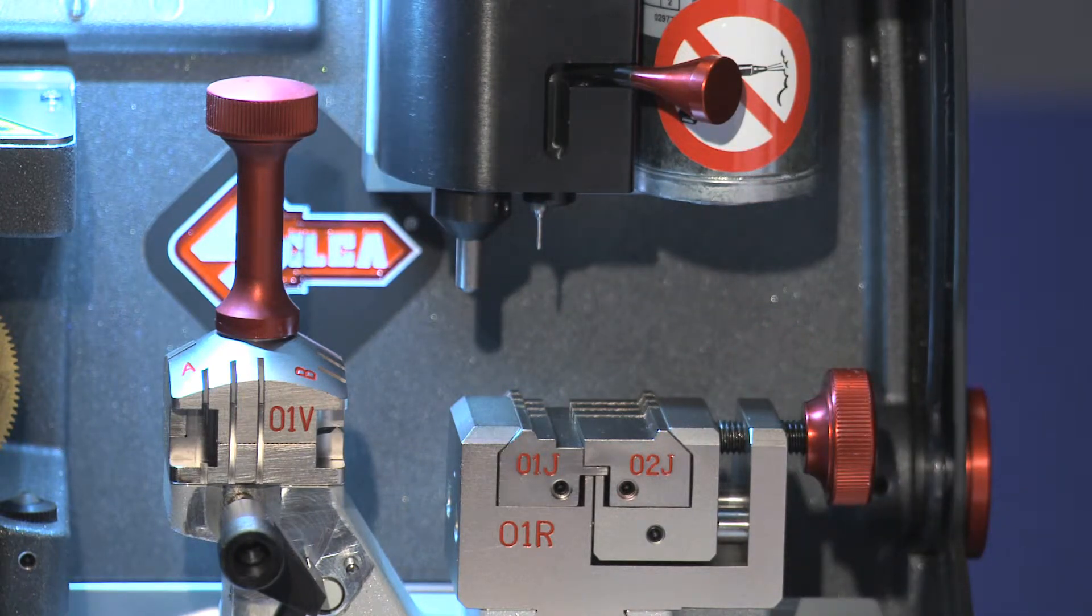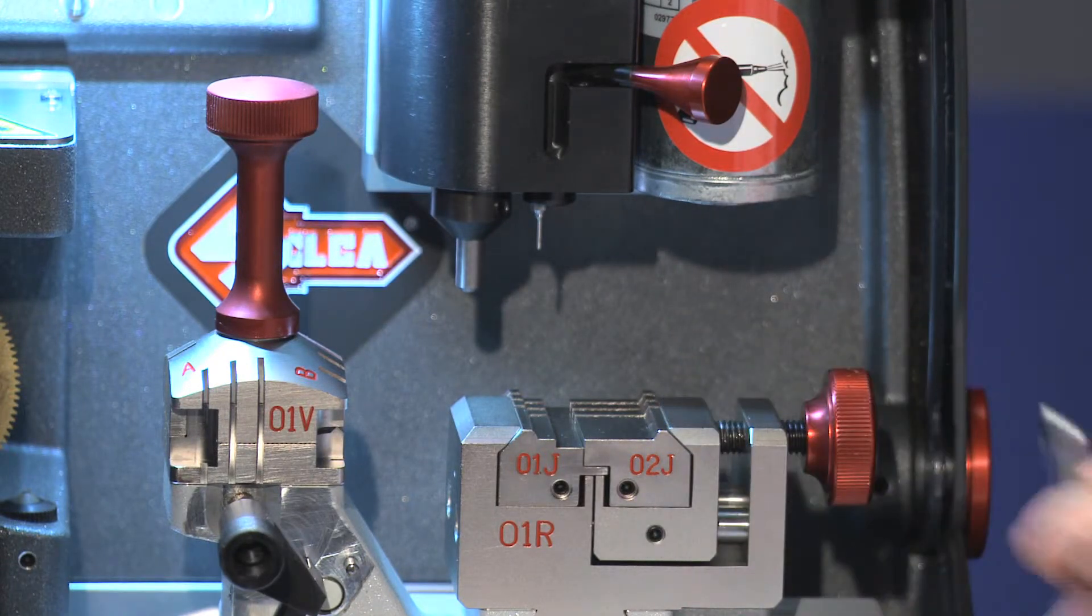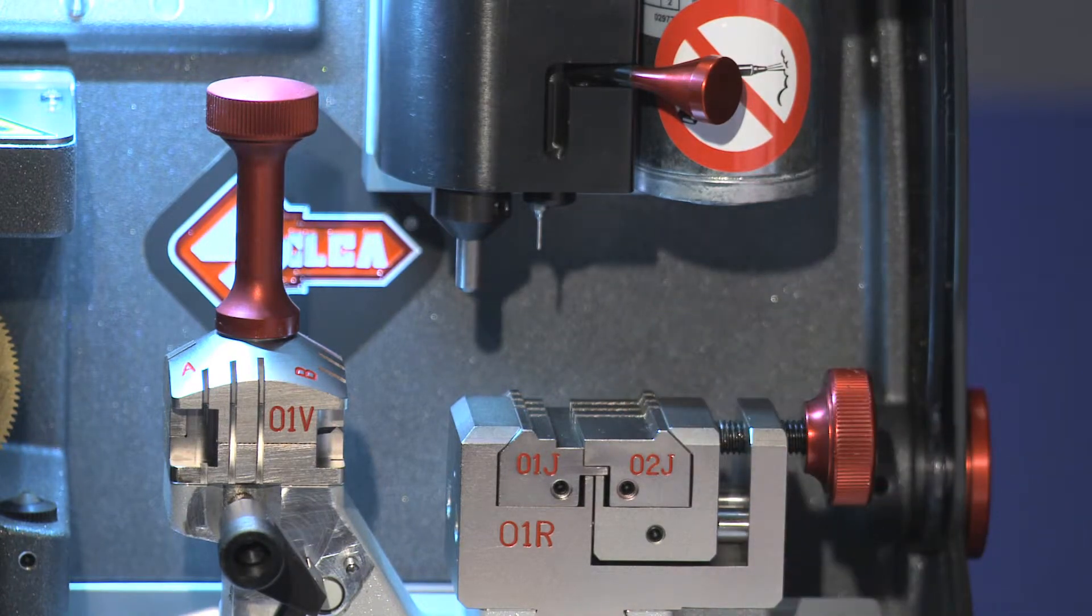The standard cutters included with the machine are 01L for laser keys and the 01D for dimple keys. Some applications may require optional cutters.